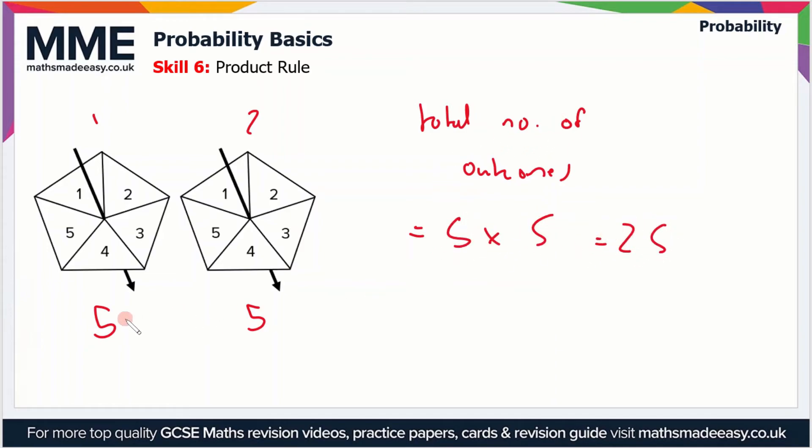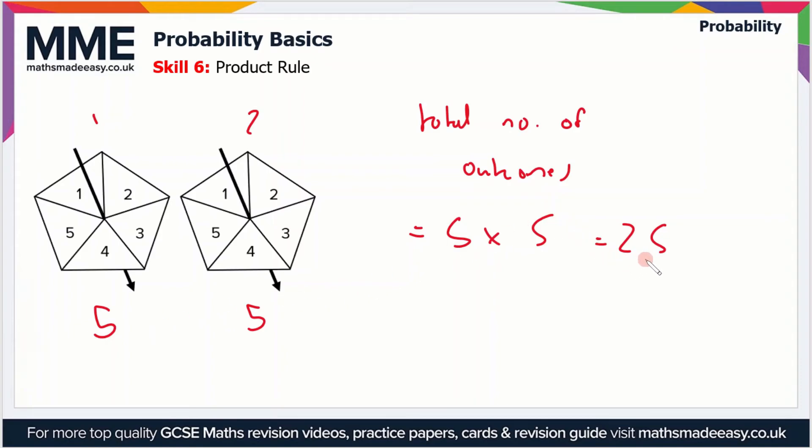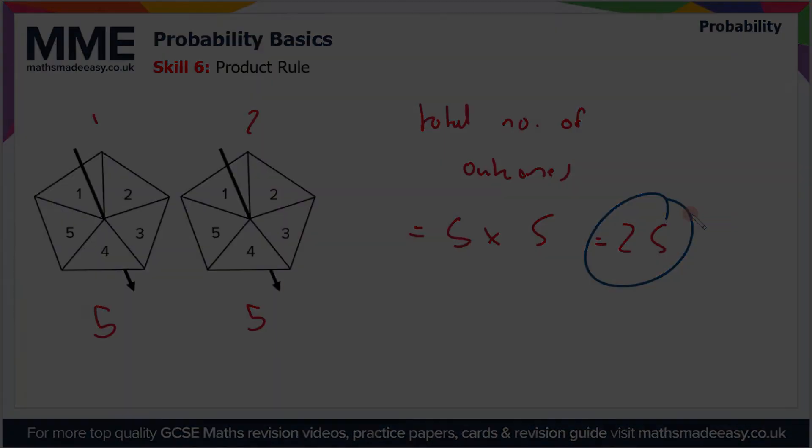If we go back to our grid in the previous question, you can see that's a 5 by 5 grid. That's this bit inside here. If you count 5 along and 5 down, you'll see that's a 5 by 5 grid, which is 25 squares. So the total number of outcomes is 25.